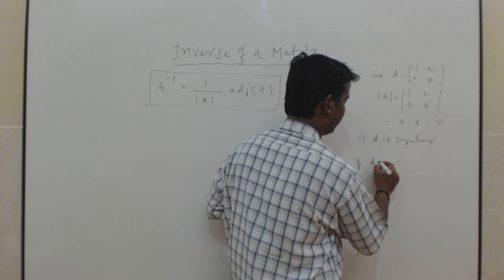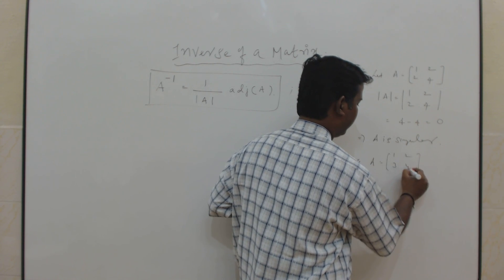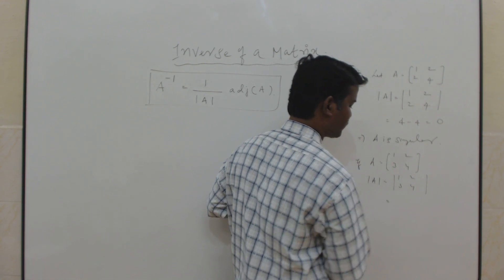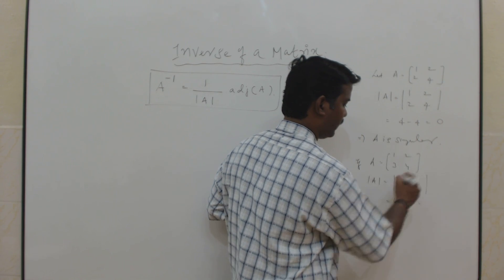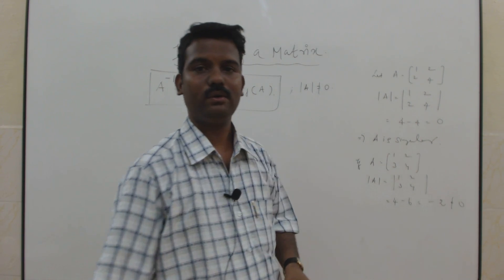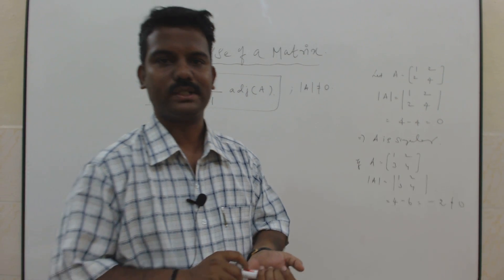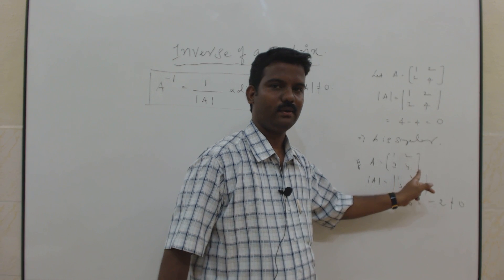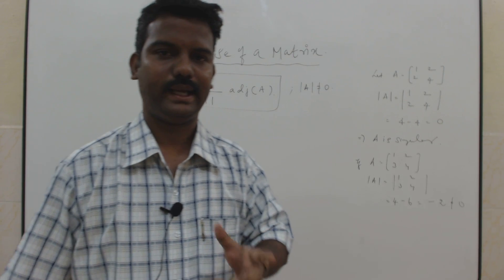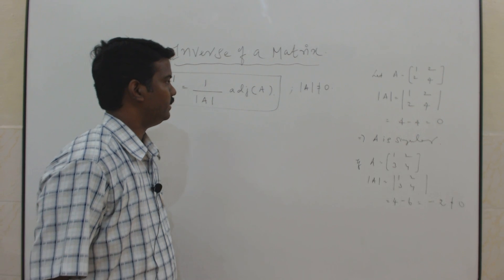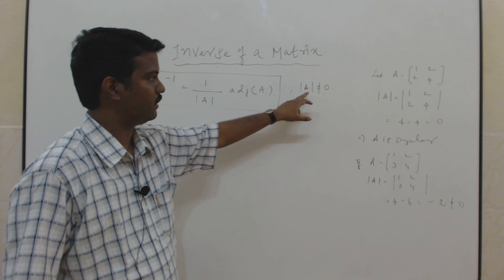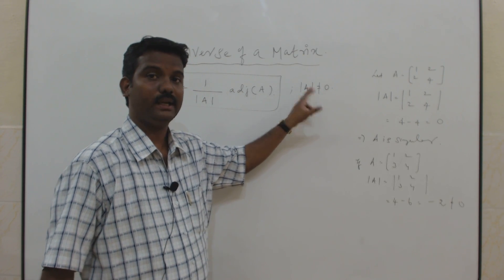Suppose A = [1, 2; 3, 4]. Find the determinant: 1×4 − 2×3 = 4 − 6 = −2, which is not equal to 0. If the determinant of A is not equal to 0, then that type of matrix is called a non-singular matrix. So the inverse formula applies provided the determinant of A is not equal to 0, which means the given matrix must be non-singular.